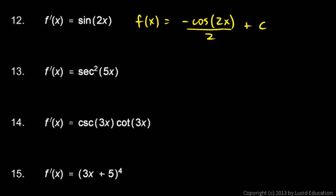Okay, in the next one, f prime is secant squared 5x. Well, the tangent function will be the anti-derivative of the secant squared function. So, let's try f of x is tangent of 5x.